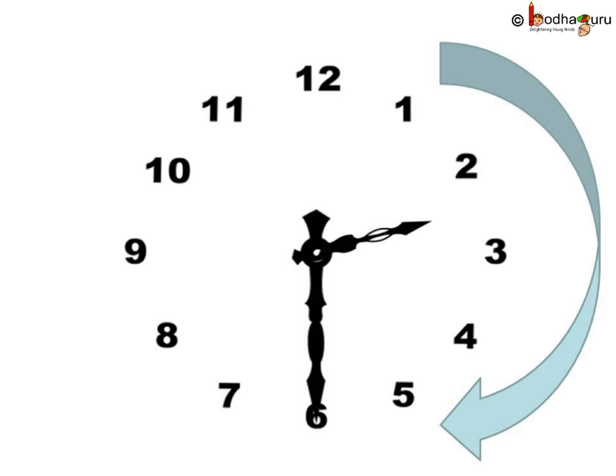Let's find out. Look, the shorter hand or the hour hand is between 2 and 3. And we know how the hands of the clock move in the forward direction, in the right direction, from smaller number to greater number. So when the shorter hand is between 2 and 3, we know it is something past 2.